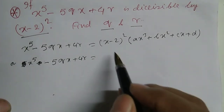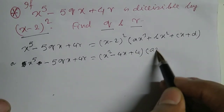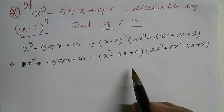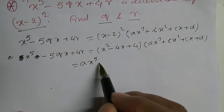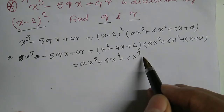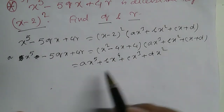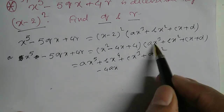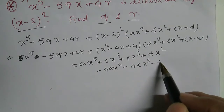We expand (x minus 2) squared to get x squared minus 4x plus 4, multiplied by ax cubed plus bx squared plus cx plus d. Expanding, we get ax to the power 5 plus bx to the power 4 plus cx squared plus dx squared.